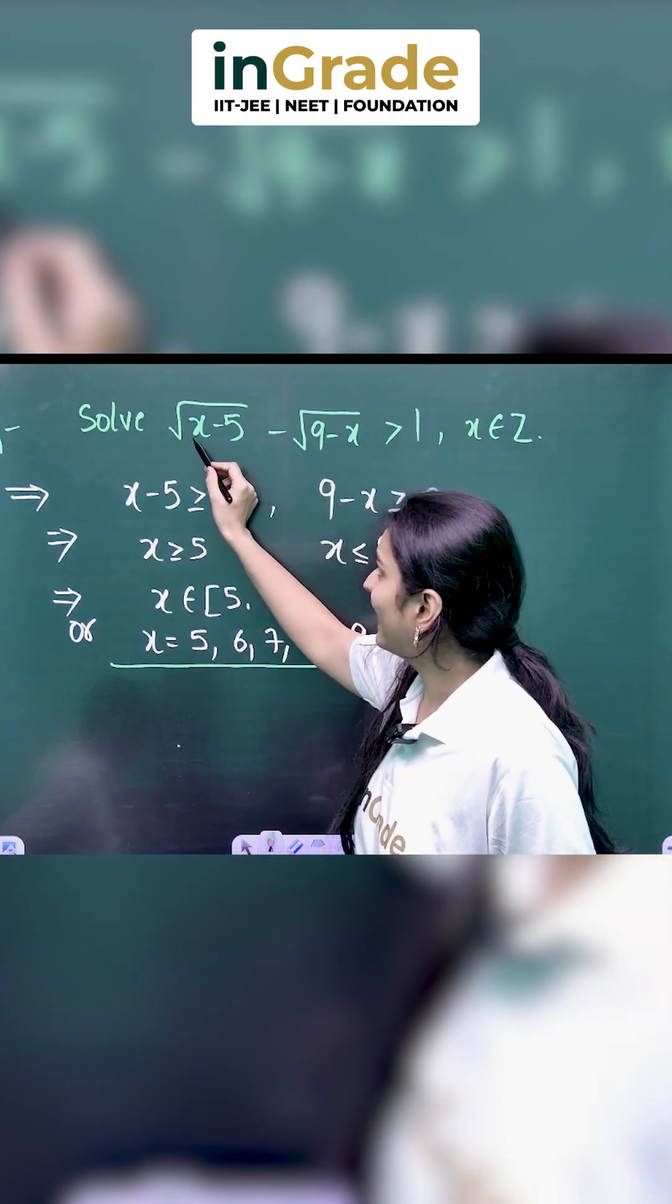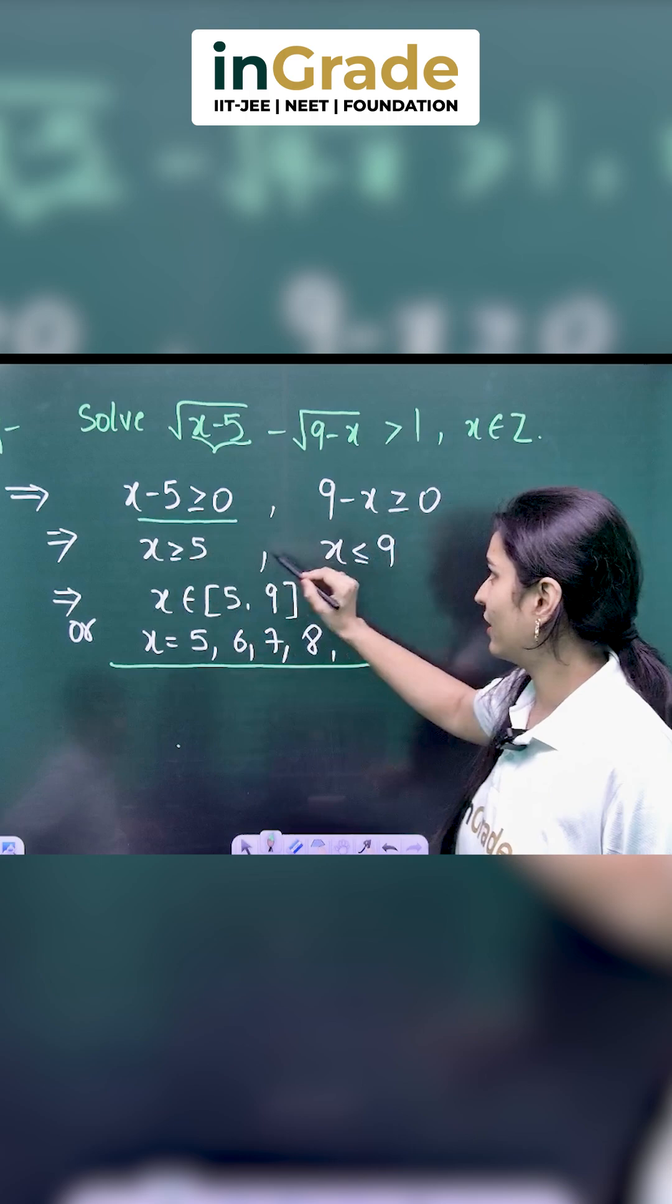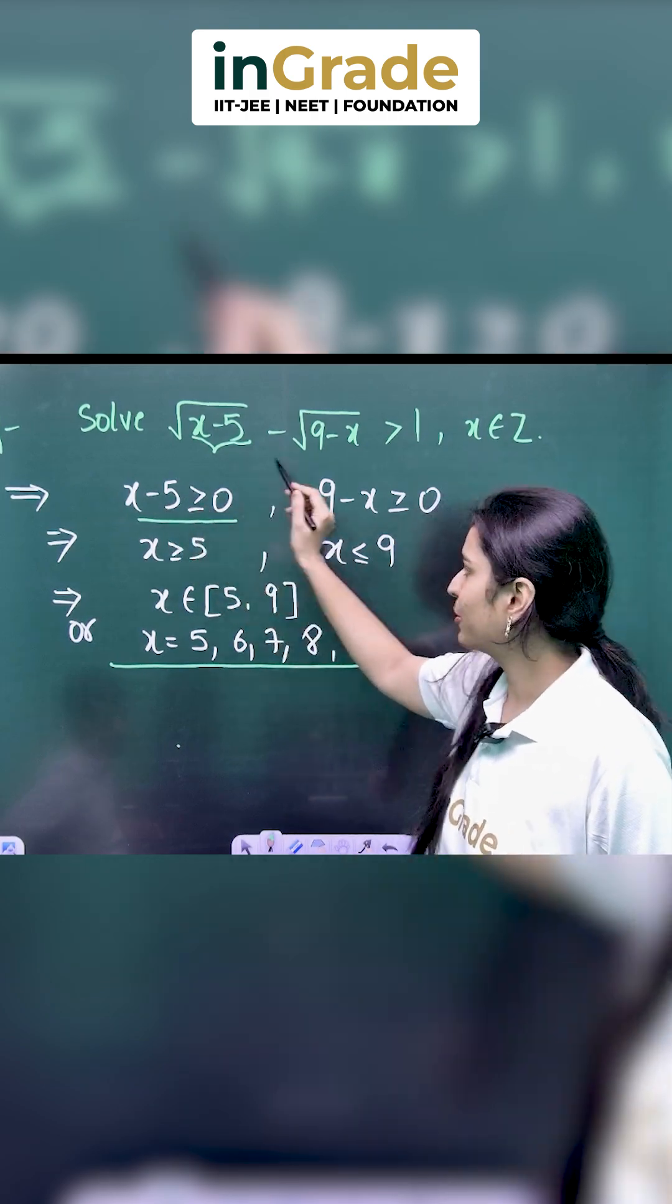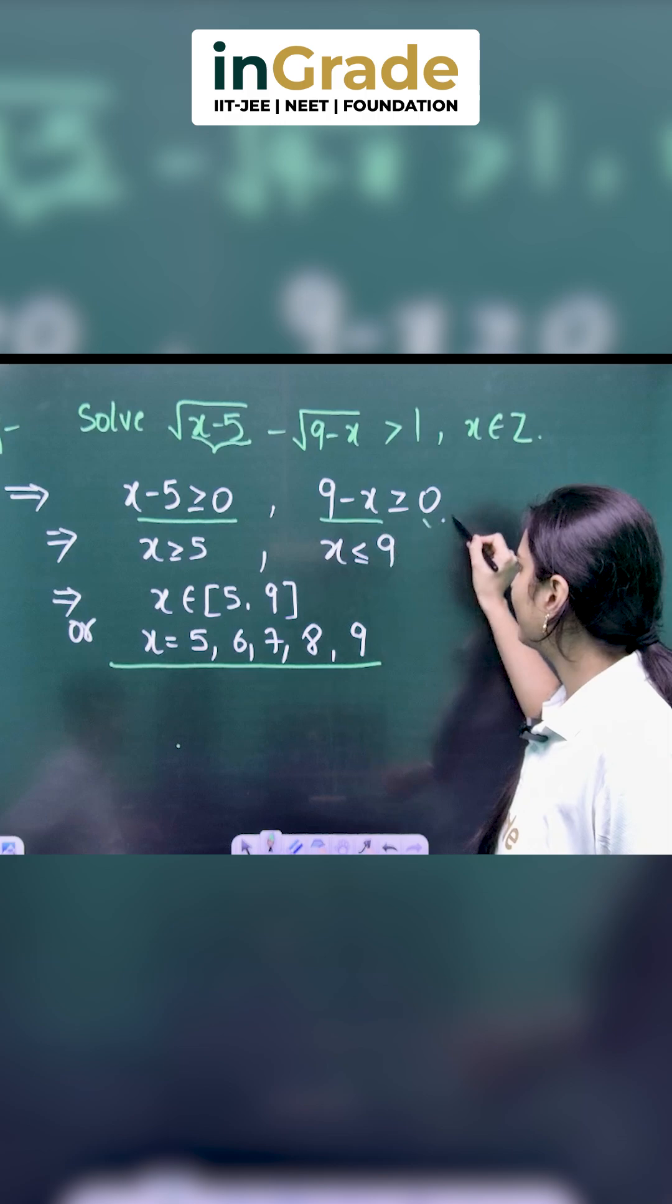We know that any quantity which is inside the square root should be always positive. So, x-5 should be greater than or equal to 0. Similarly, 9-x should be greater than or equal to 0.